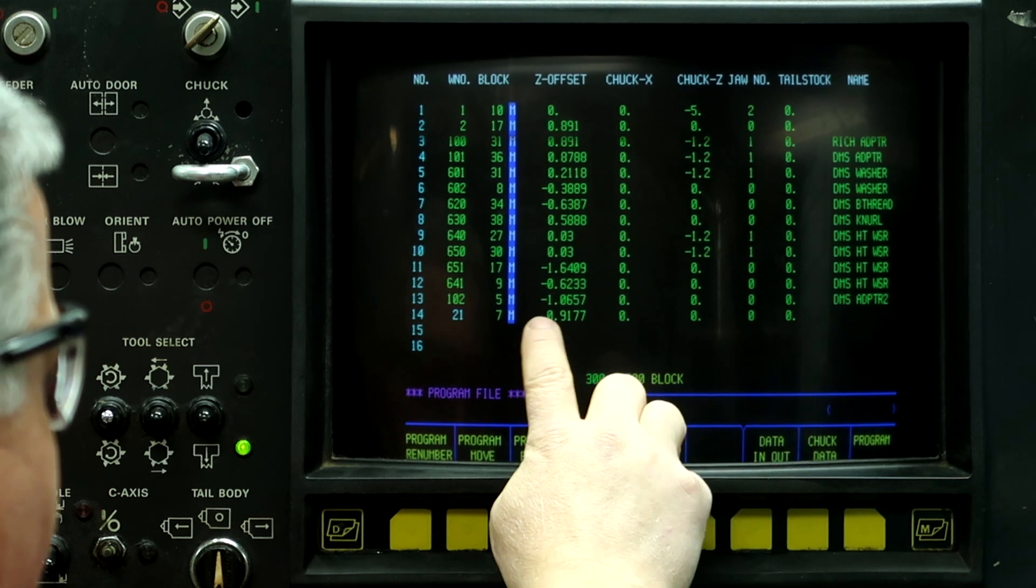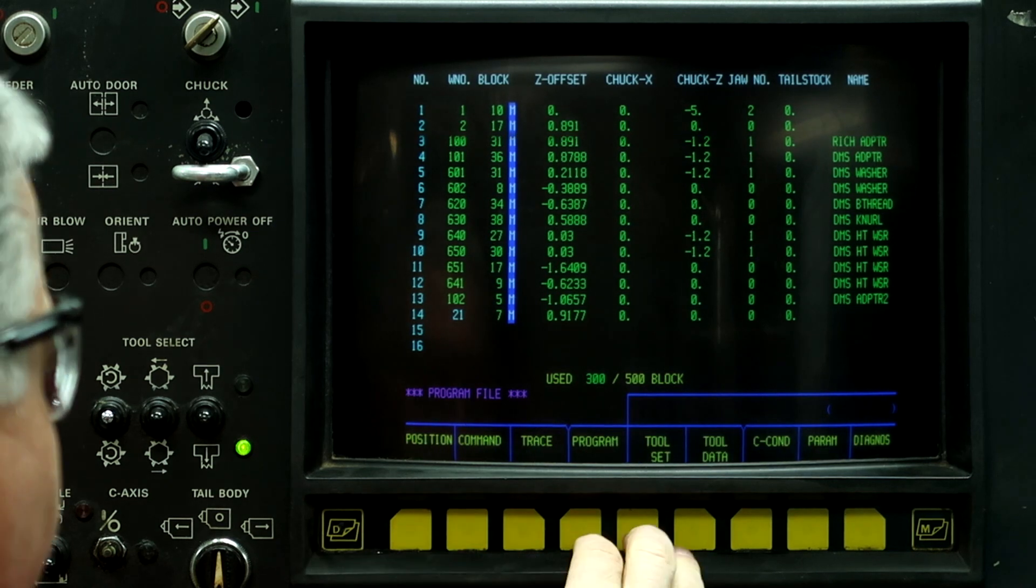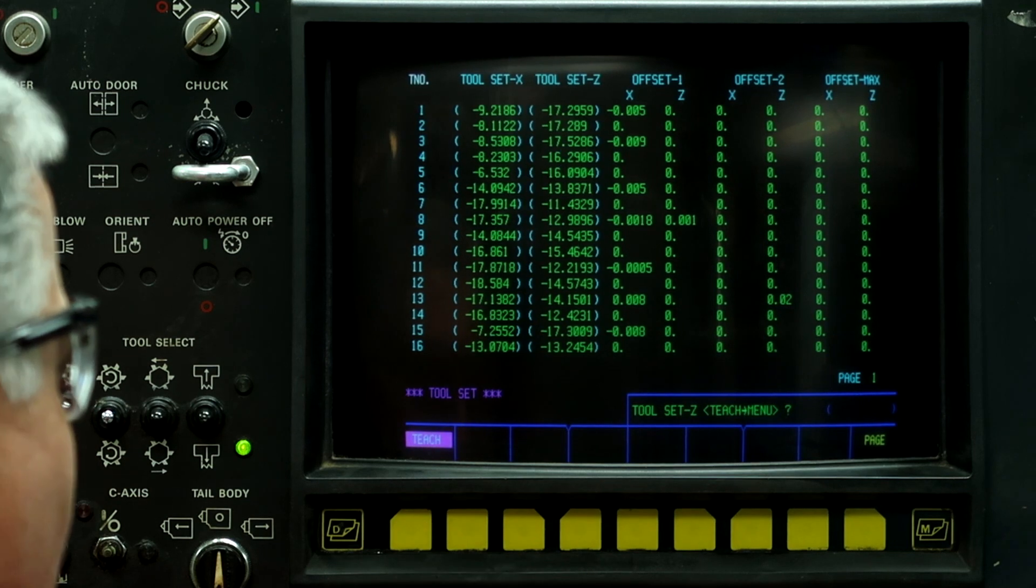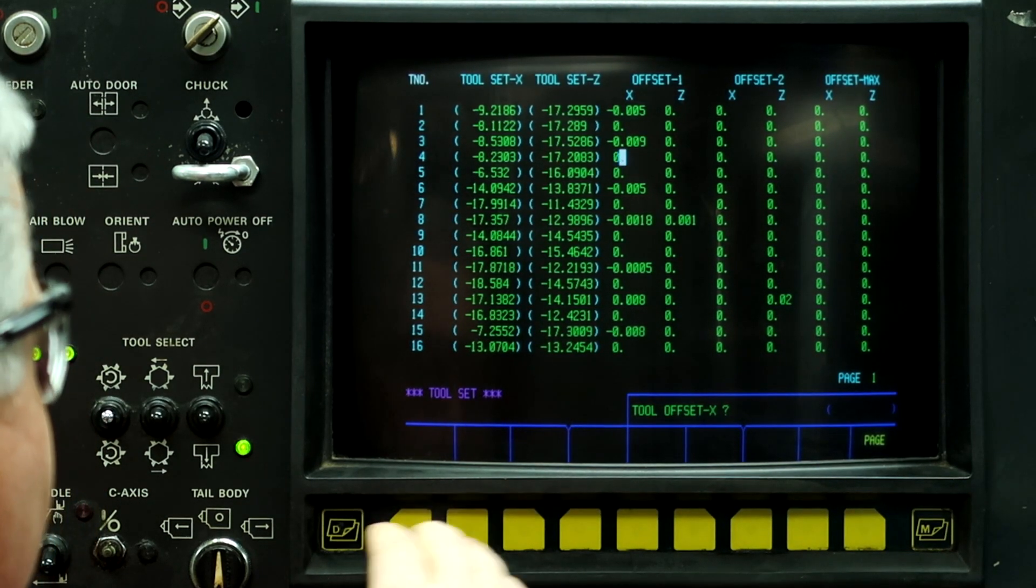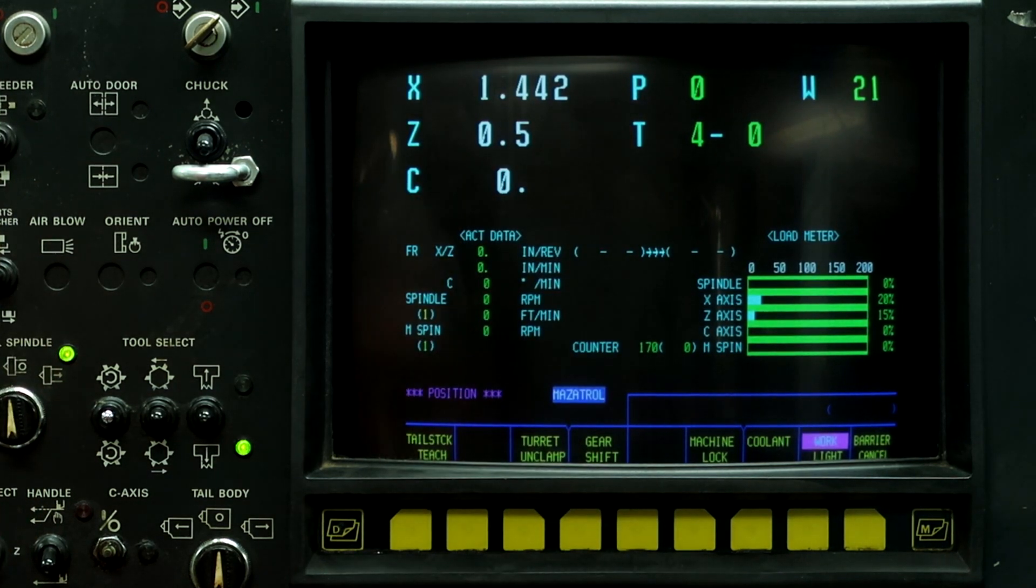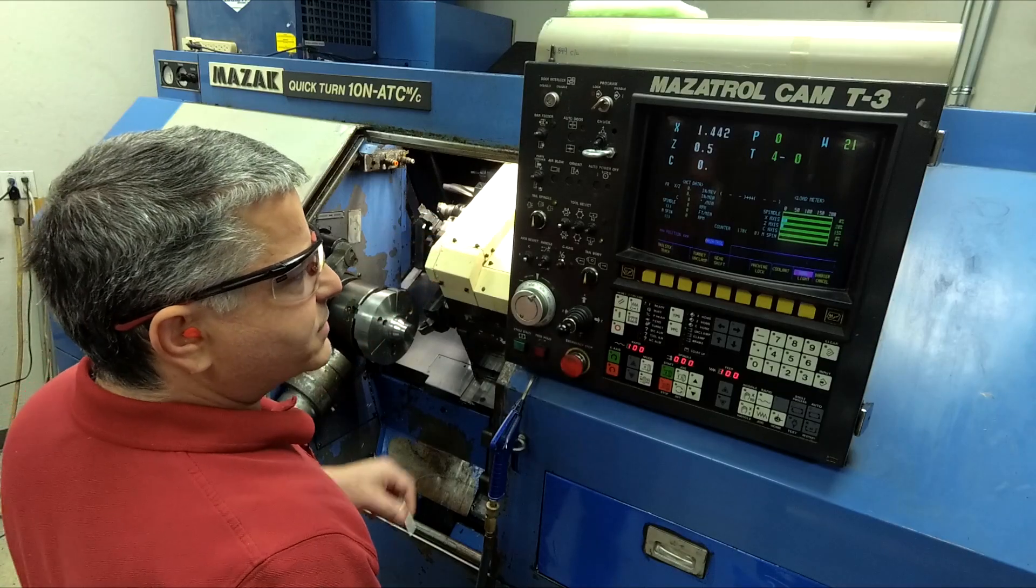So if we go to the tool set, down to four, teach, one point four one seven seven input. Now go to the position screen. Now we're a half inch in front of our Z because we set it off of a half inch dowel pin.